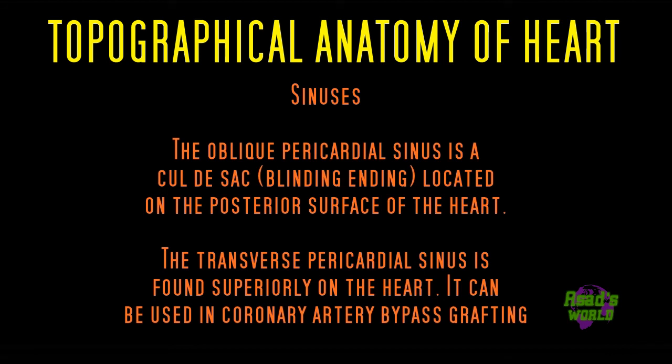There are two sinuses on the heart: the oblique pericardial sinus and the transverse pericardial sinus. The oblique pericardial sinus is a cul-de-sac, meaning it is blind-ending, and it is located on the posterior surface of the heart. The transverse pericardial sinus is found superiorly on the heart and is used in coronary artery bypass grafting.